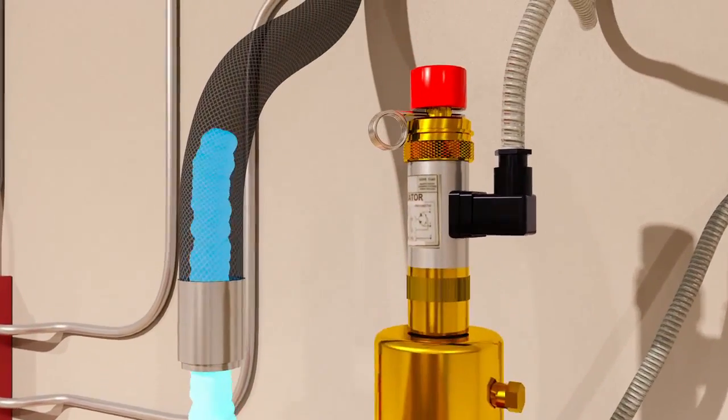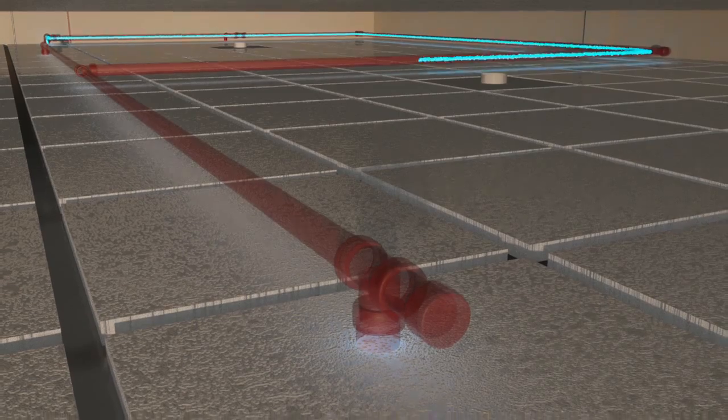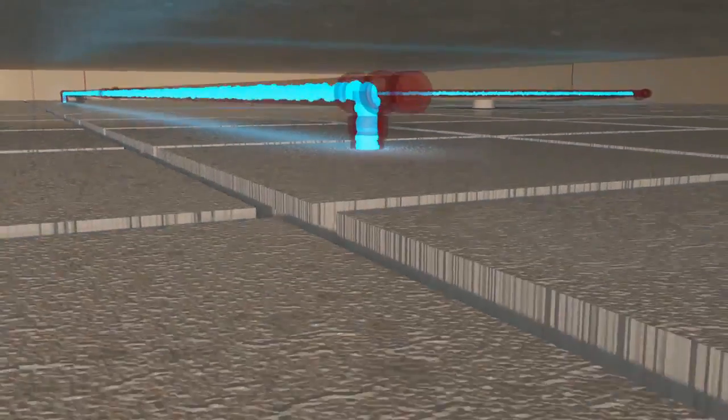In a single tank system, the actuator opens the tank valve, discharging agent through distribution piping and nozzles into the hazard area.